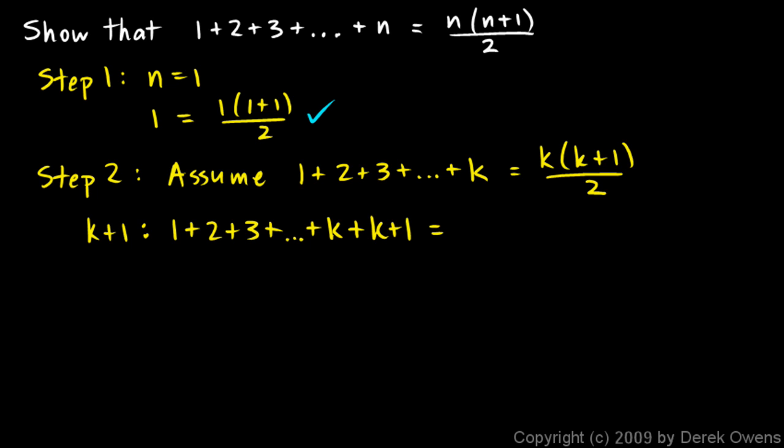And then the right side will have k plus 1 plugged in for the n. So we have k plus 1 times k plus 1 plus 1, all over 2.